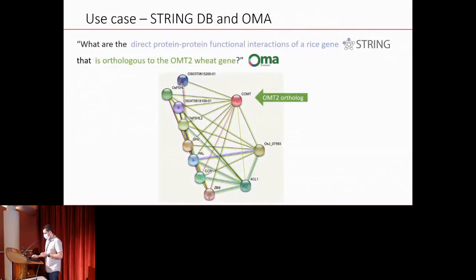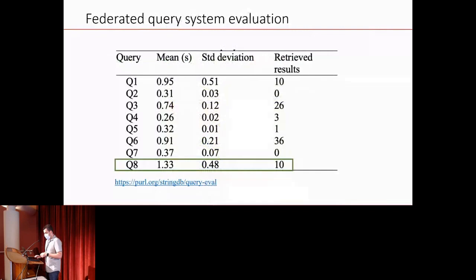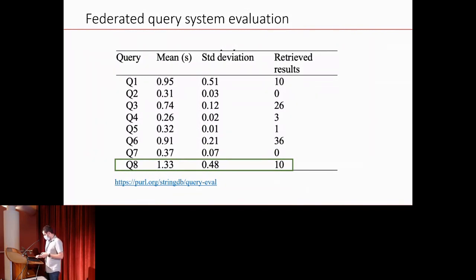Coming back to the original question: the answer identifies the corresponding gene in rice and the network of interactions. The query combining these different data sources took around one second on average. More details about the query evaluation are available at this persistent URL link.